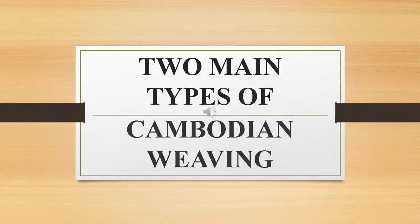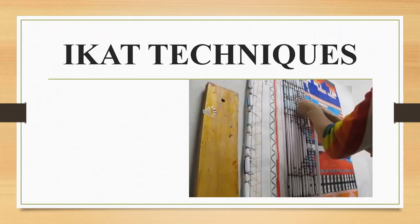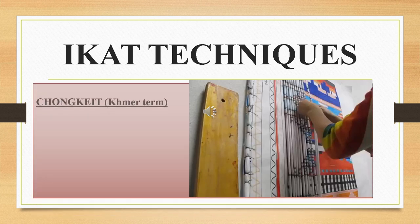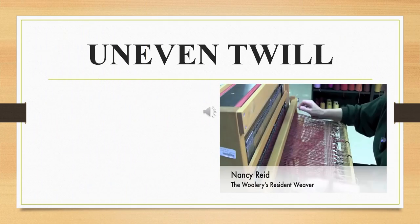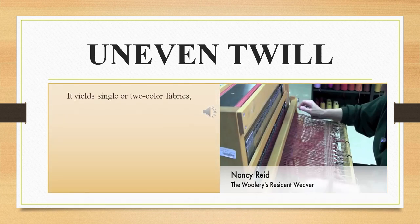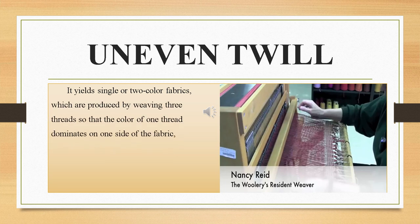Two main types of Cambodian weaving. First, we have Ikat techniques — we have Chonky Murterm, where weavers tie and dye portions of wet yarn before weaving begins. Next, an even twill, which yields single or two-color fabrics produced by weaving three threads so that the color of one thread dominates on one side of the fabric, while the two determine the color of the reverse side.